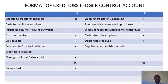At the debit side, we have cheques to creditors or suppliers, cash to creditors or suppliers, purchases returns or returns outward, discount received, bills payable, contra entry or control settlement, credit notes received, and closing creditors or balance carried down. The balance carried down is the difference between the credit side total and the debit side figures.